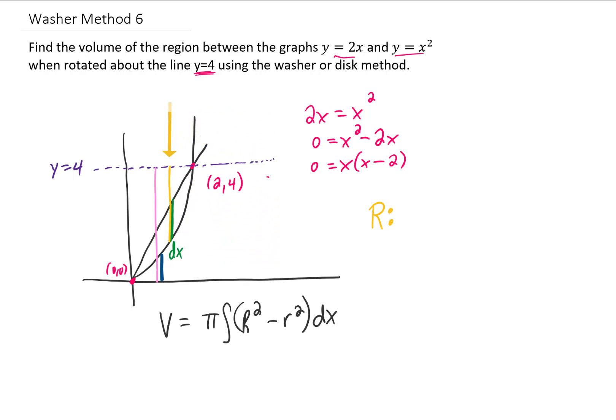So if we want the length of this gold outer radius here, we can take the length of the pink line, which is 4, and subtract the length of the blue line, which is x squared. Now we've got a lot of colors going here, so I'm going to actually make a little bit of space and draw that gold line right in there.